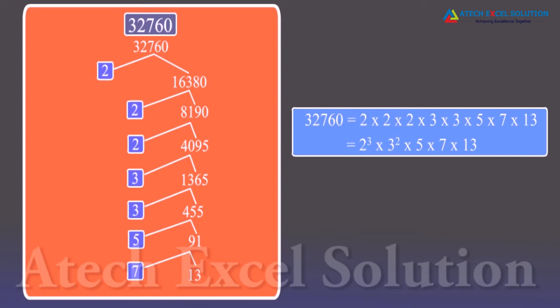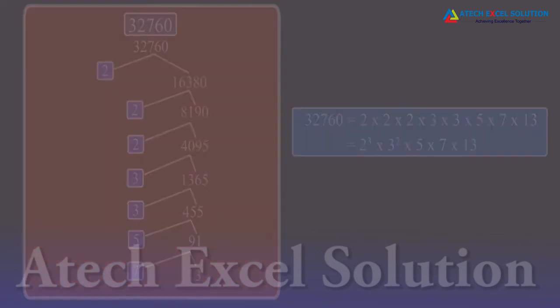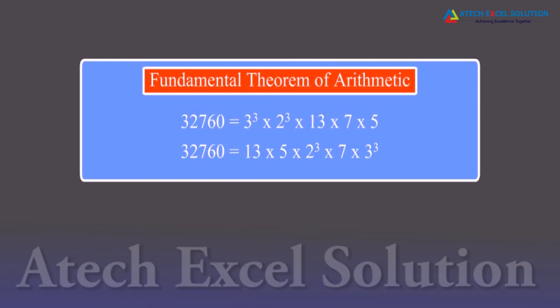This is called the Fundamental Theorem of Arithmetic. We can also observe that this factorization is unique, no matter what is the order of these factors. Every composite number can be expressed or factorized as a product of primes, and this factorization is unique apart from the order in which the prime factors occur.